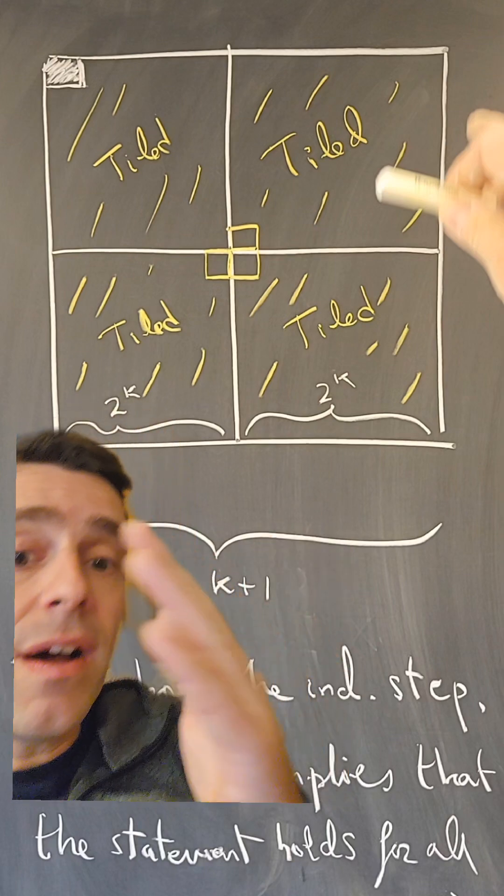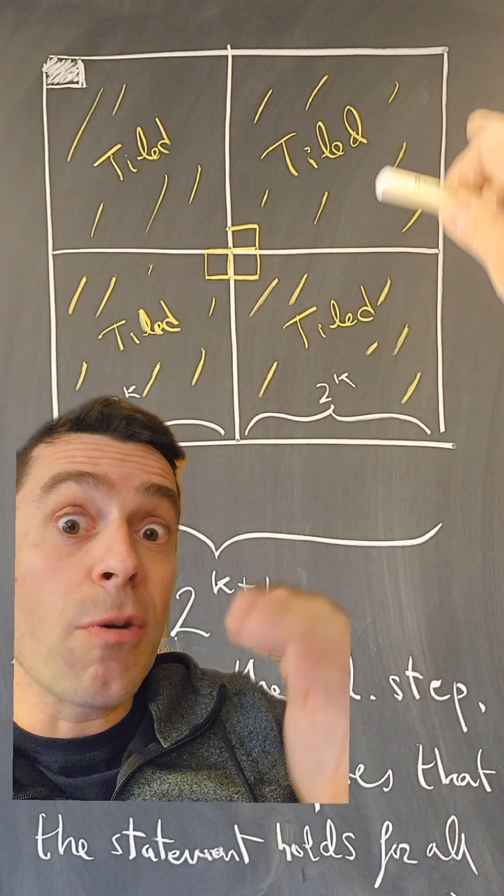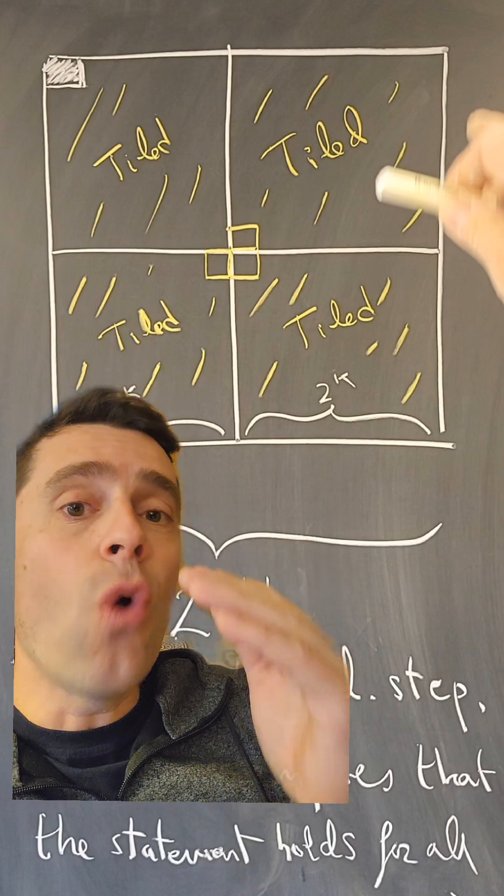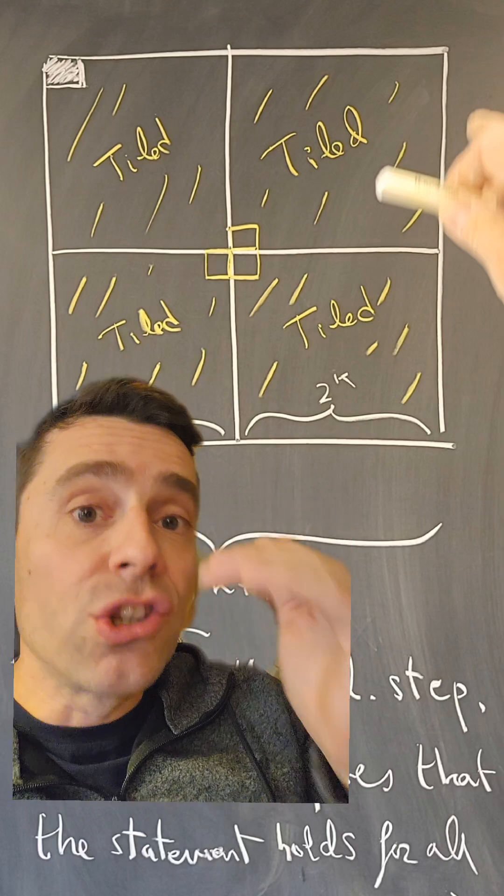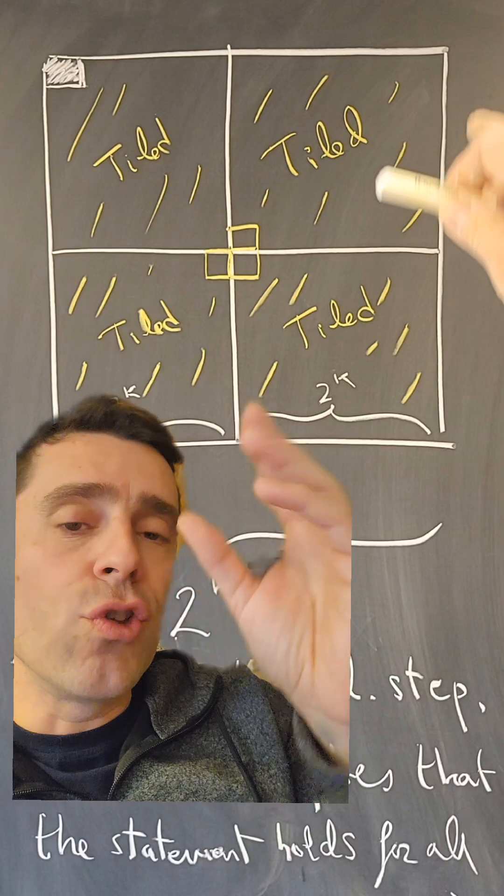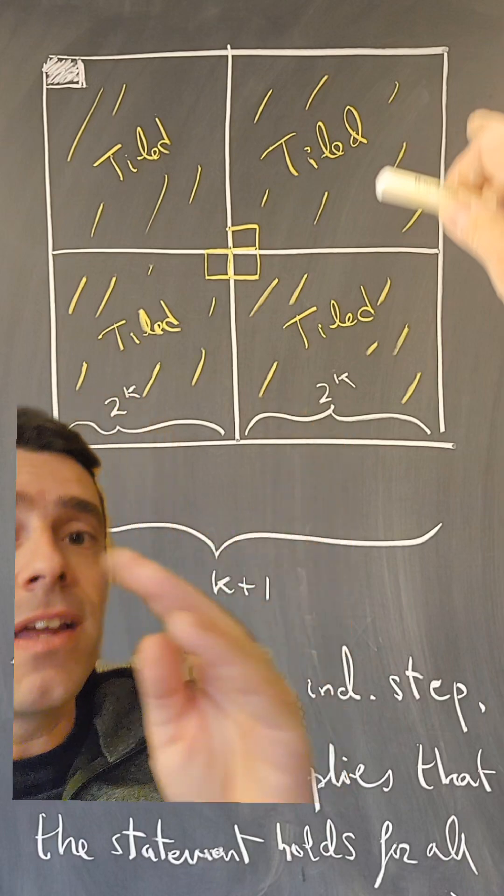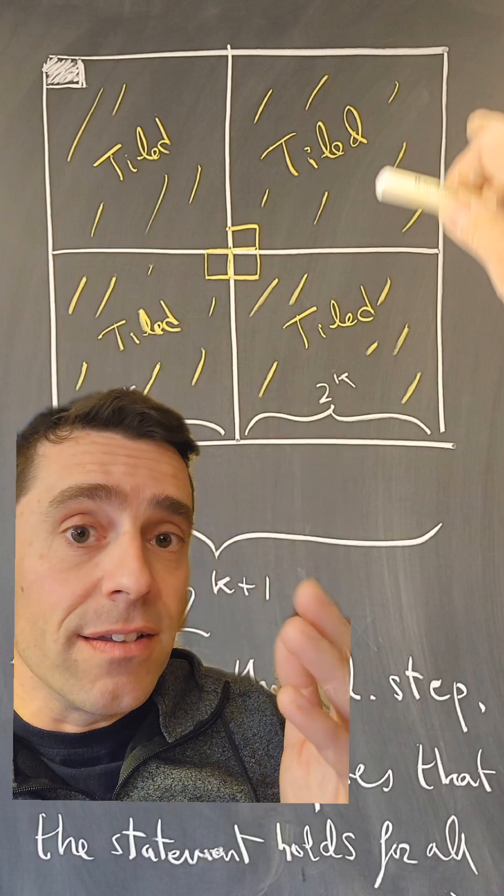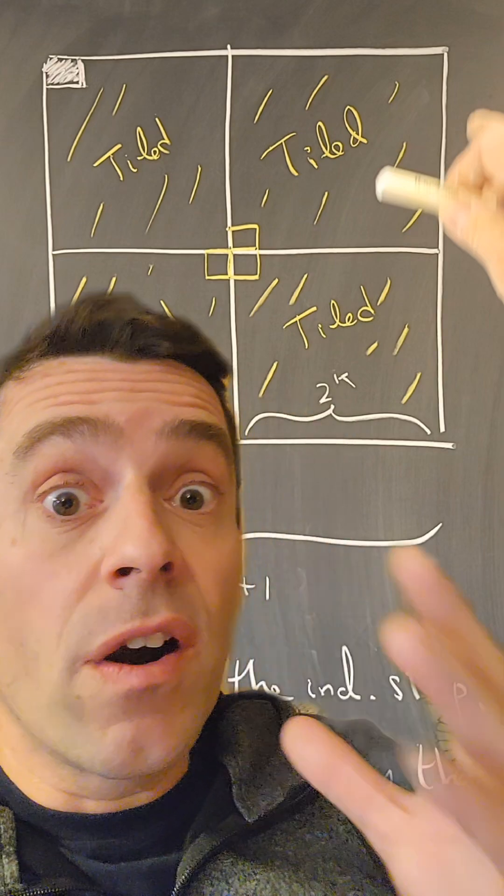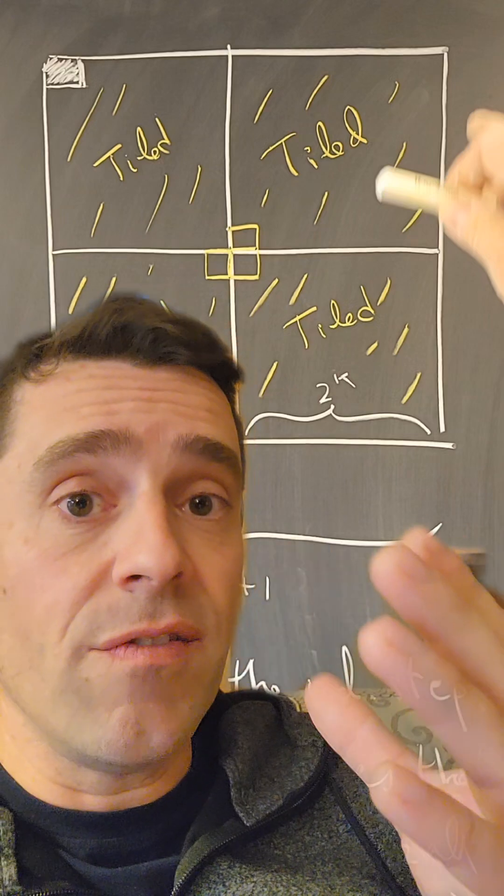So for example, if you have a chessboard that is 2 to the trillion by 2 to the trillion, then you actually need to do this a trillion times before you find out what the tiling is in the trillionth case. And that I consider to be a far cry from a constructive proof.